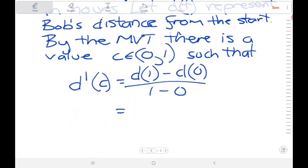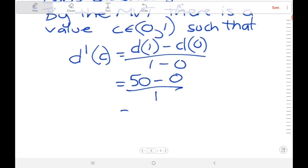The distance after one hour, well, we know the entire drive took him an hour, so that's 50. The distance at 0 hours, at the beginning, well, he hadn't moved from his starting point, so that's 0. And this is divided by 1. So we get 50. There exists a value at some point, some number of minutes, a portion of the total hour, at which point the derivative of the distance function gives us a value of 50.